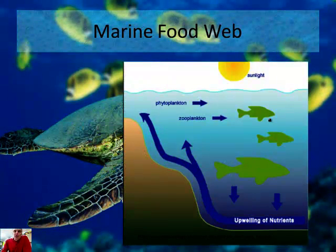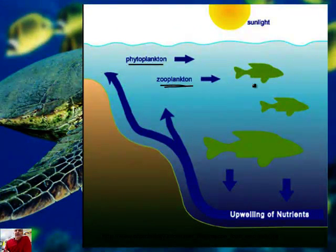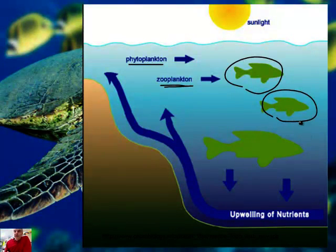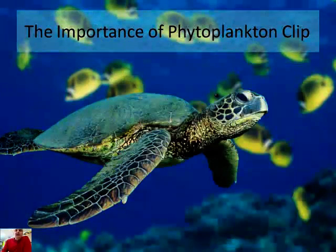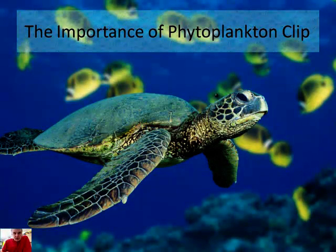There is something called a marine food web. Essentially what's going on is we've got these things called phytoplankton — tiny little critters — and zooplankton. They're eaten by larger fish, who are then subsequently eaten by larger fish. The important thing to note here is this upwelling of nutrients. We've been talking about upwelling. This upwelling is what these characters feed on — the phytoplankton and the zooplankton. Let's get a clip about what phytoplankton do and how important they are to the entire world — not just to the marine ecosystem, but to the entire world.